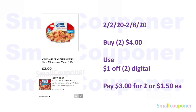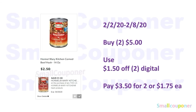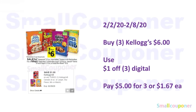The Dinty Moore, the 9-ounce cans, are $2.00 each. Buy two for $4.00, use the $1 off 2 digital, and pay $3.00 for two or $1.50 each. The Hormel Mary Kitchen is $2.50 each; buy two for $5.00, use the $1.50 off 2 digital, and pay $3.50 for two or $1.75 each. For Kellogg's cereals, buy three for $6.00, use the $1 off 3 digital, and pay $5.00 for three or $1.67 each.